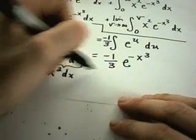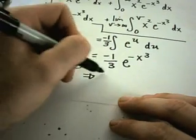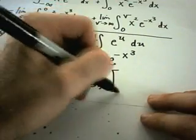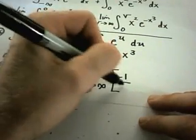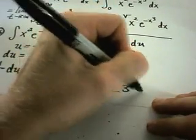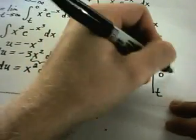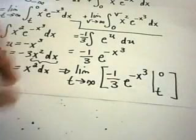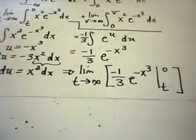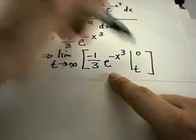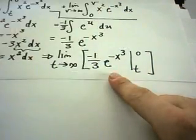I'll end up having the limit as t goes to infinity. And now I've found my anti-derivative. It's negative one third e to the negative x cubed from t to zero. So find another piece of paper here. Alright, so this is now the thing that we're working on. Again, I'm just going to plug in my upper limit and my lower limit.